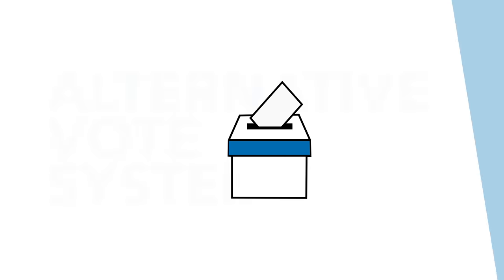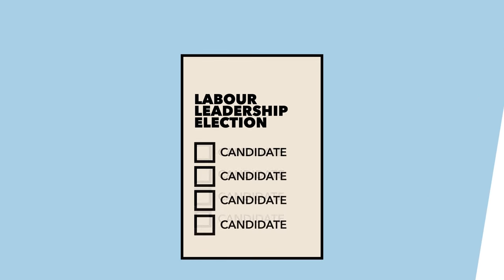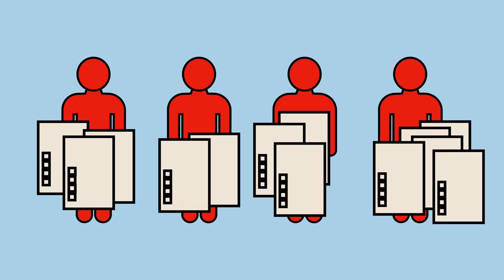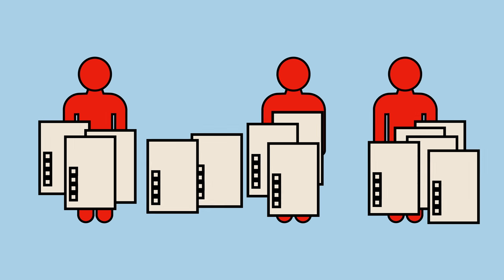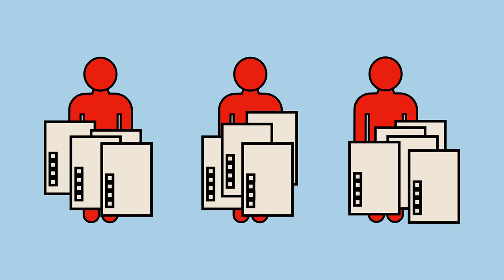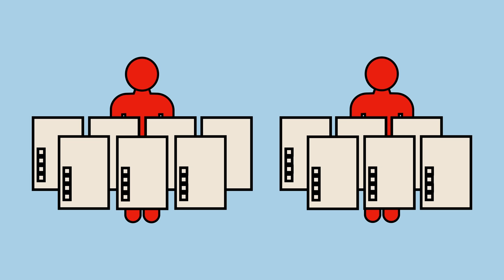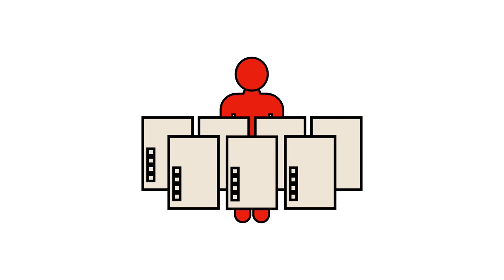The voting system used is an alternative vote system. This means that each voter ranks the candidates on their ballot paper. The candidate with the fewest first-place preferences is eliminated, and their second-place votes are counted and reassigned. This continues until one candidate has more than 50% of the vote, and this person becomes the leader of the Labour Party.